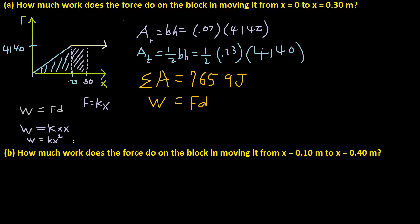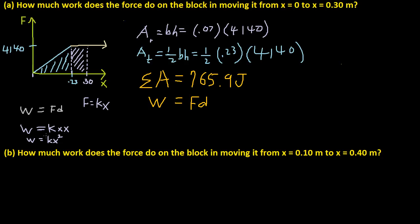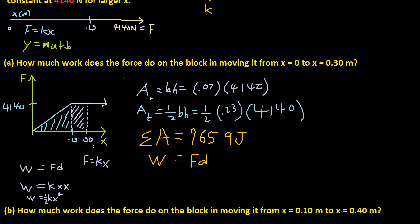But wait, didn't we agree that because this is a triangle, it's going to be 1 half base times height? Well, yes we did. That is why we must put 1 half in front of it because this equation right here represents the triangle. So it's going to be 1 half times kx squared.